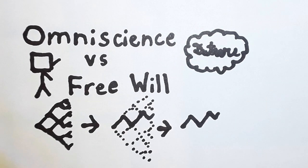In this video, I'll be discussing how God's omniscience and human free will can coexist. But why is this a problem in the first place? Well, the argument very roughly goes like this.